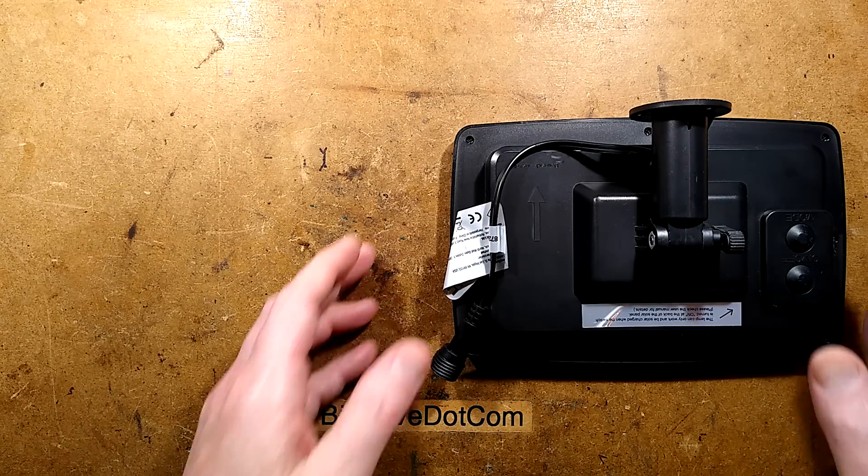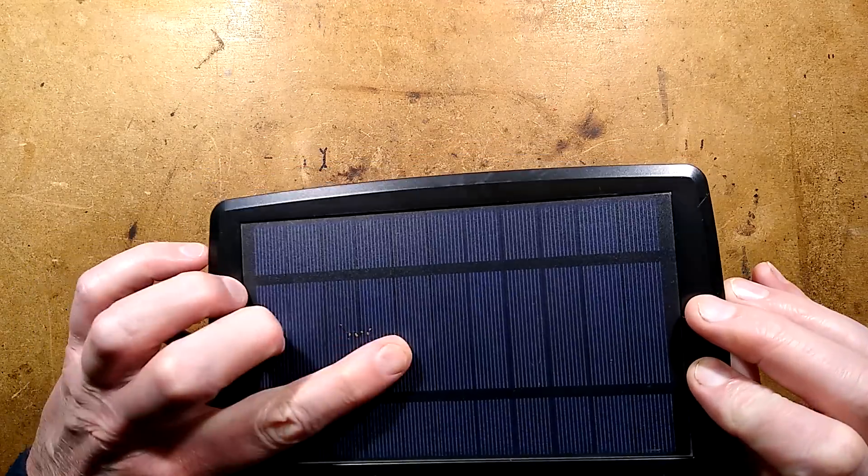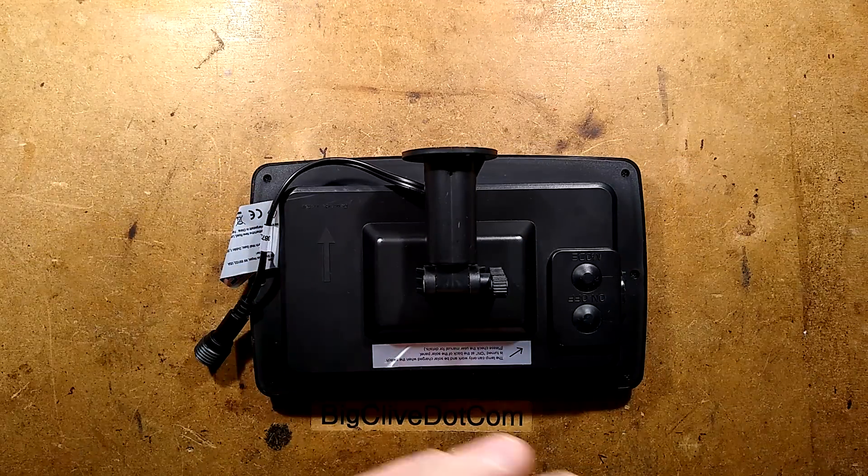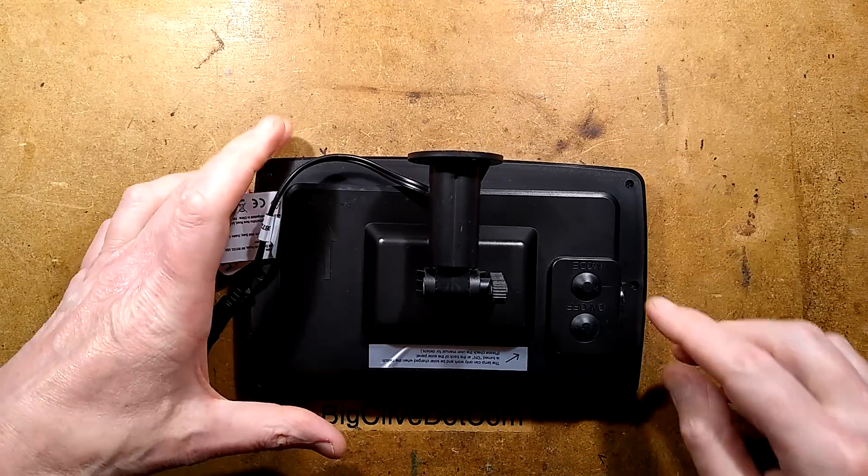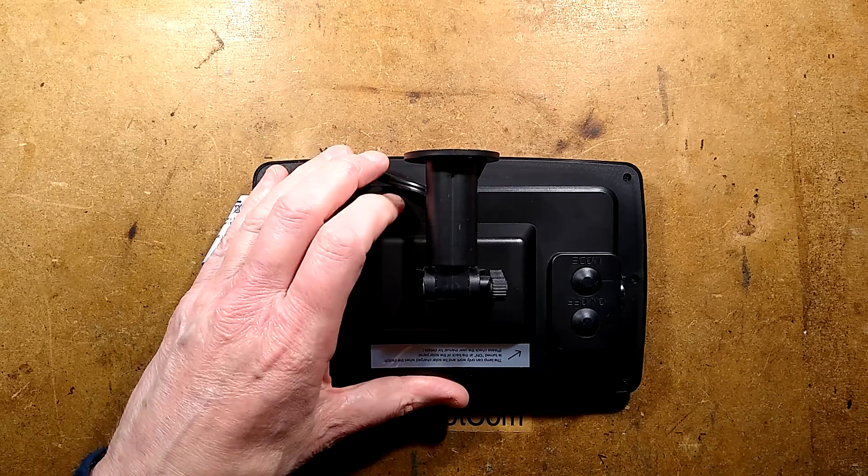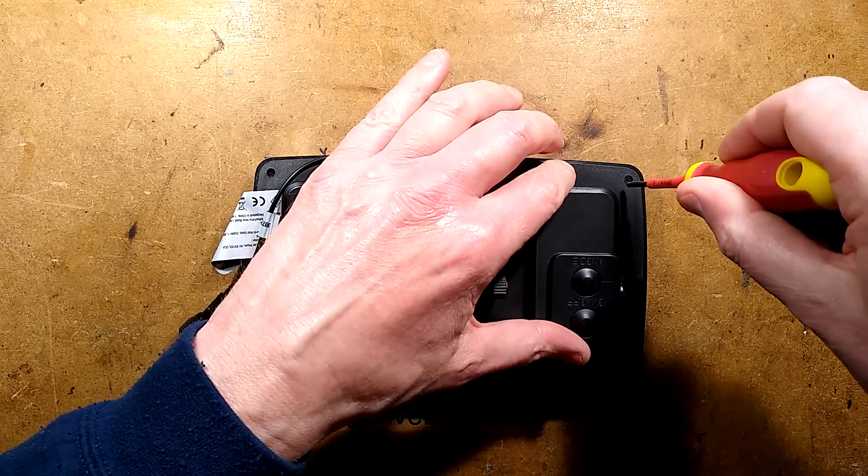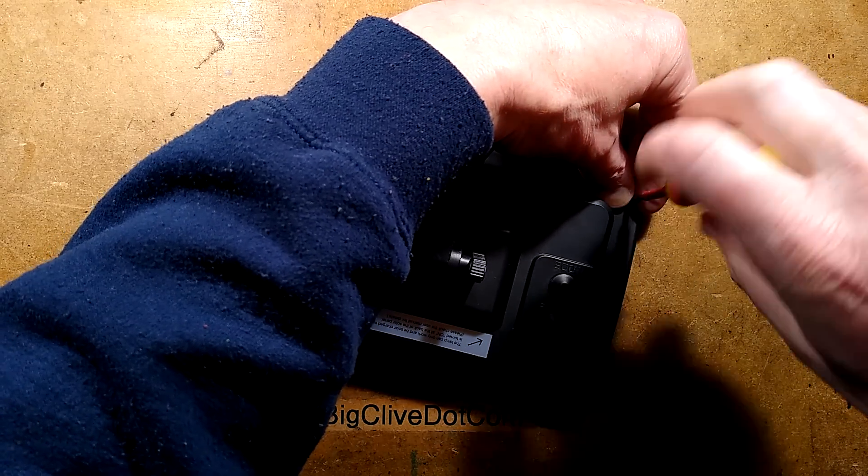Now I've got two of these lovely solar panels and we can explore one. Let's open it up. There's one, two, three, four, five, six, seven, eight screws in here, little tiny ones. I'll whip them out and we can get inside.